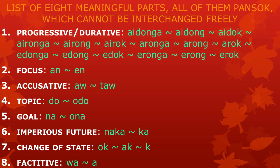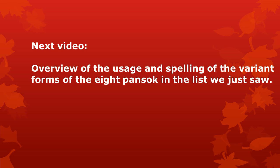The progressive durative Pansok has many variant forms. Then there is the focus, which has two variant forms: an and en. The accusative has two variant forms: ao and tau. The topic has two: do and o-do. The goal Sok has na and o-na. The imperious future meaningful part has two variant forms: naka and ka. The change of state has three variant forms: ok, ak, and ke. And last, there is the factative part, which has two variant forms: wa and aa. In the next video, we will dive deeper into Atong grammar and see an overview of the usage and spelling of the variant forms of these eight Pansok.